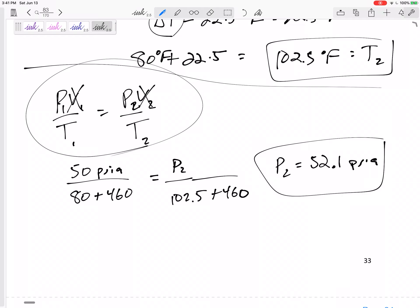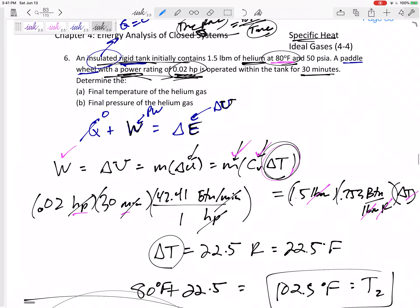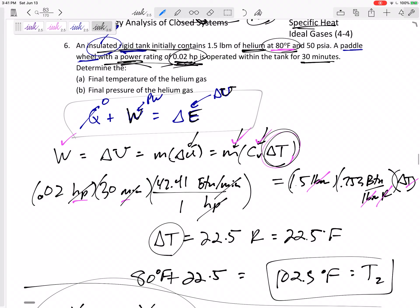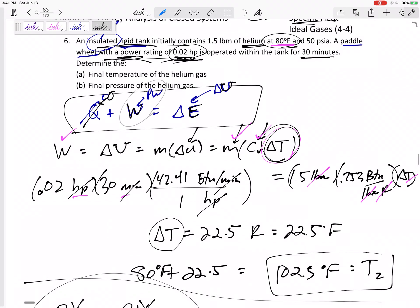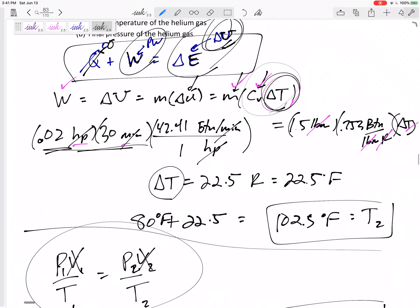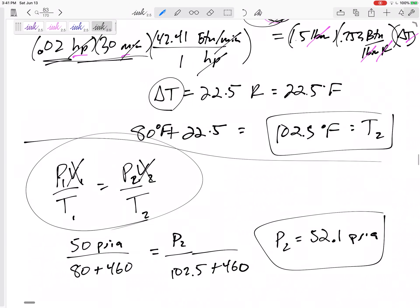So take a step back and look at what we did. We kind of wrote our energy equation. We thought about all the heat transfer. There was none, all the work besides boundary work, which was just this paddle wheel. And then the right-hand side of our equation was a delta U. And I found delta U by Cv delta T. And then from that, because it was an ideal gas, P1 V1 over T1 equals P2 V2 over T2. Because it was a rigid tank, V1 was equal to V2. If I know three of these, P1, T1, and T2, I can get P2.